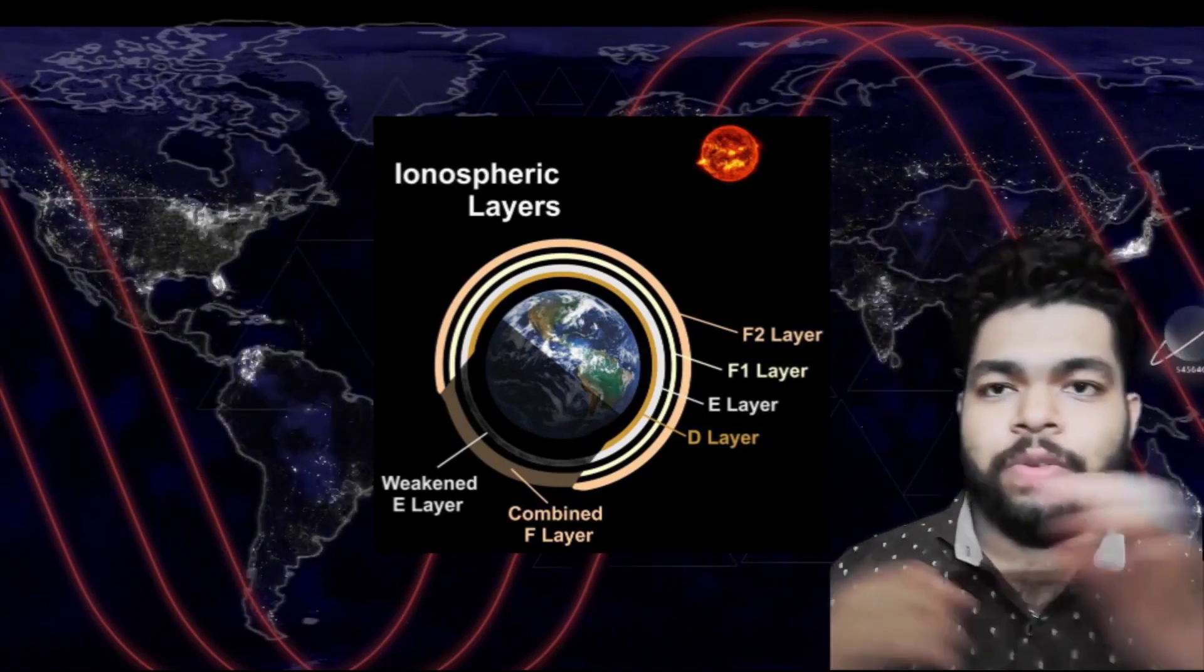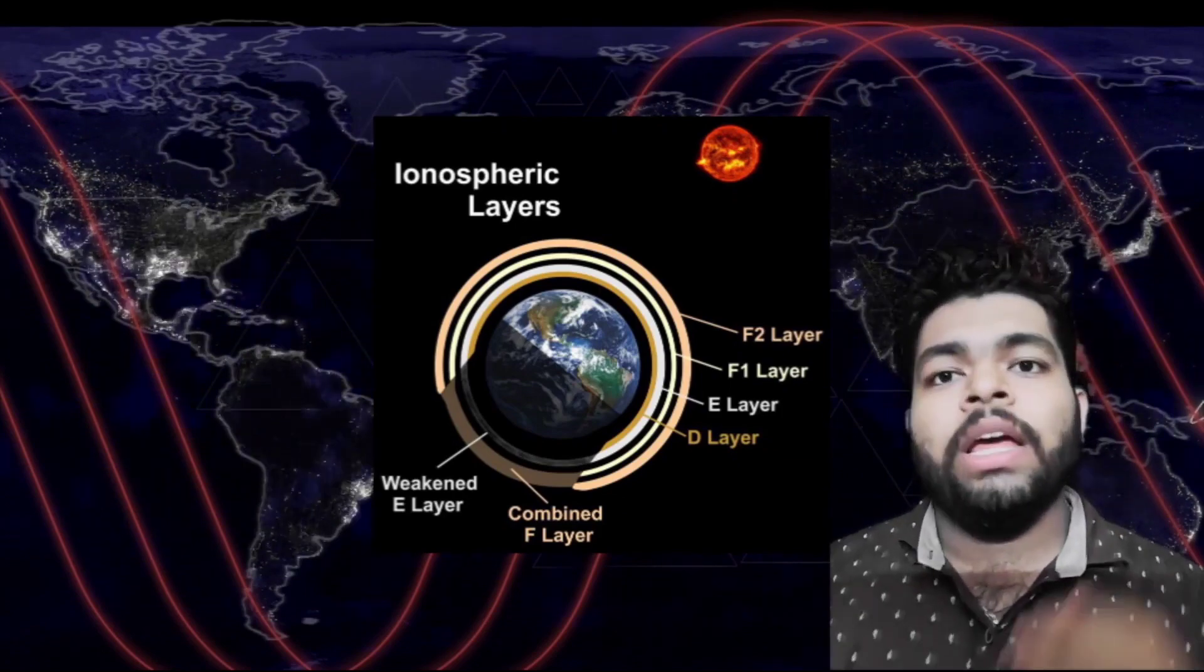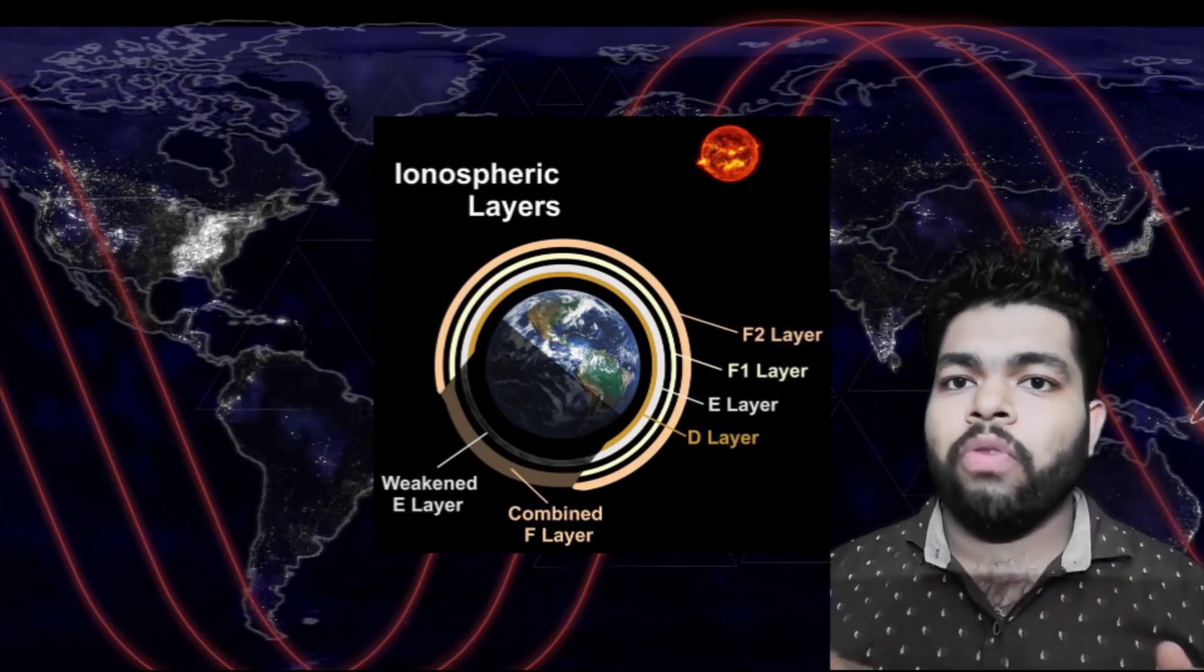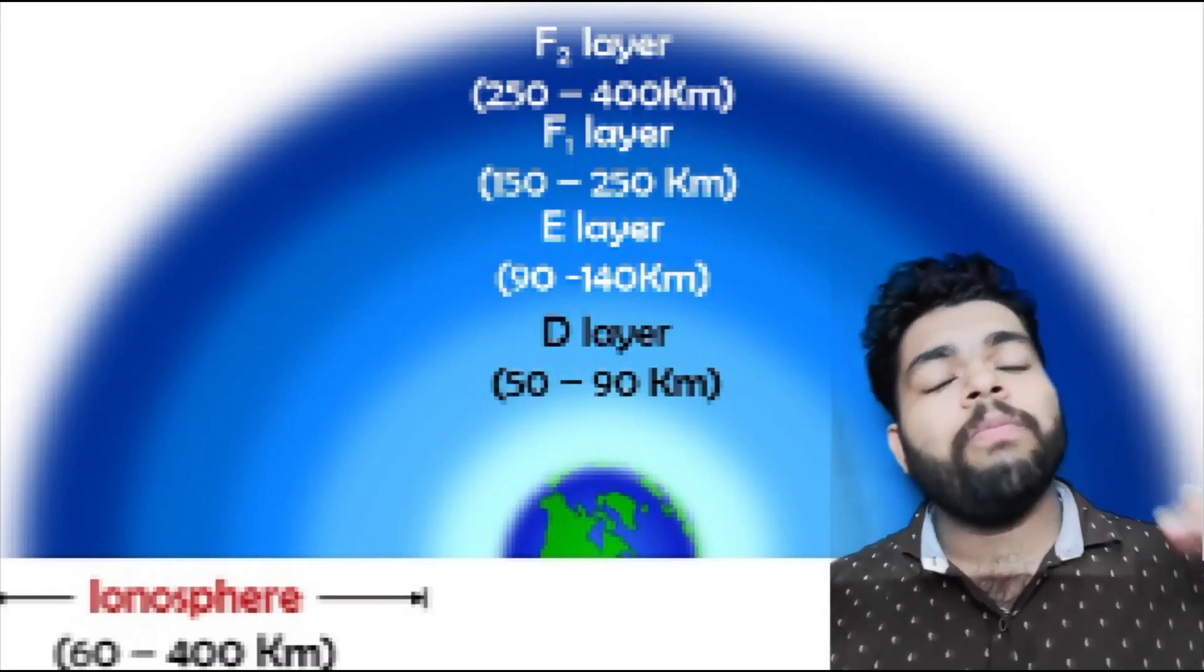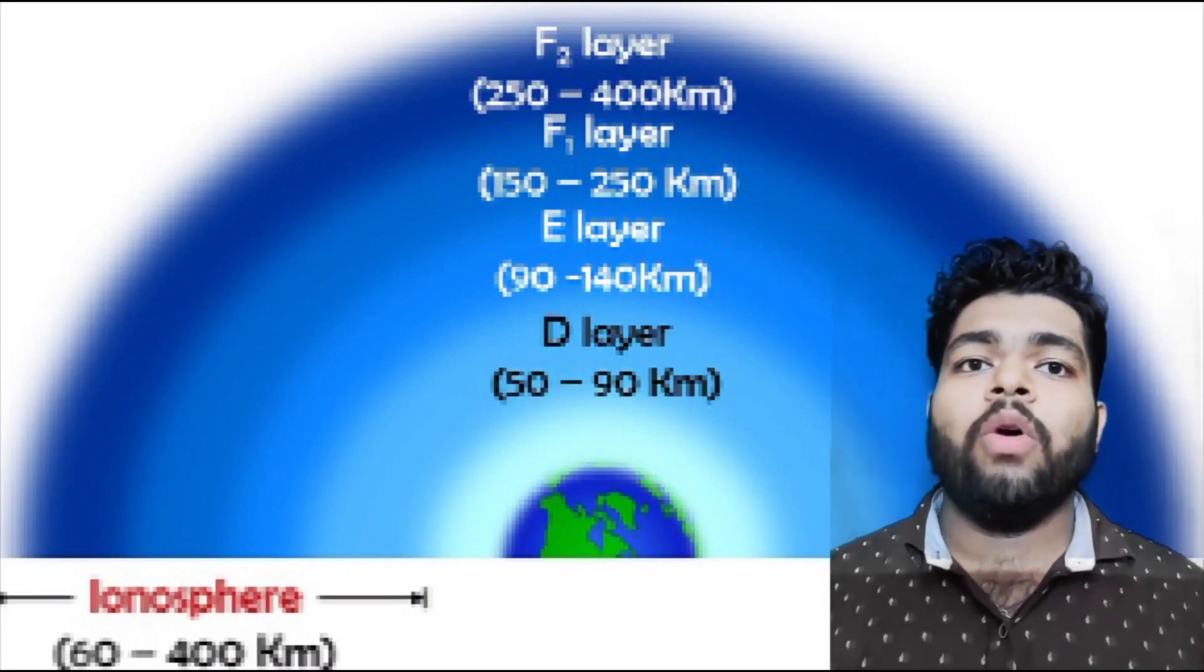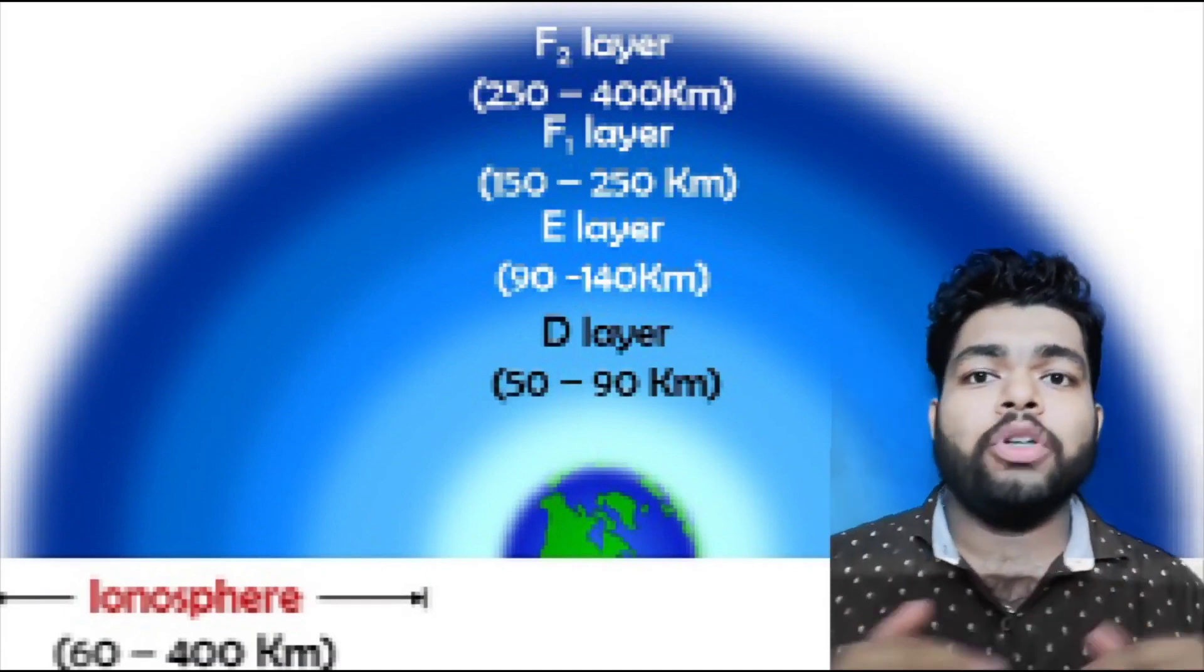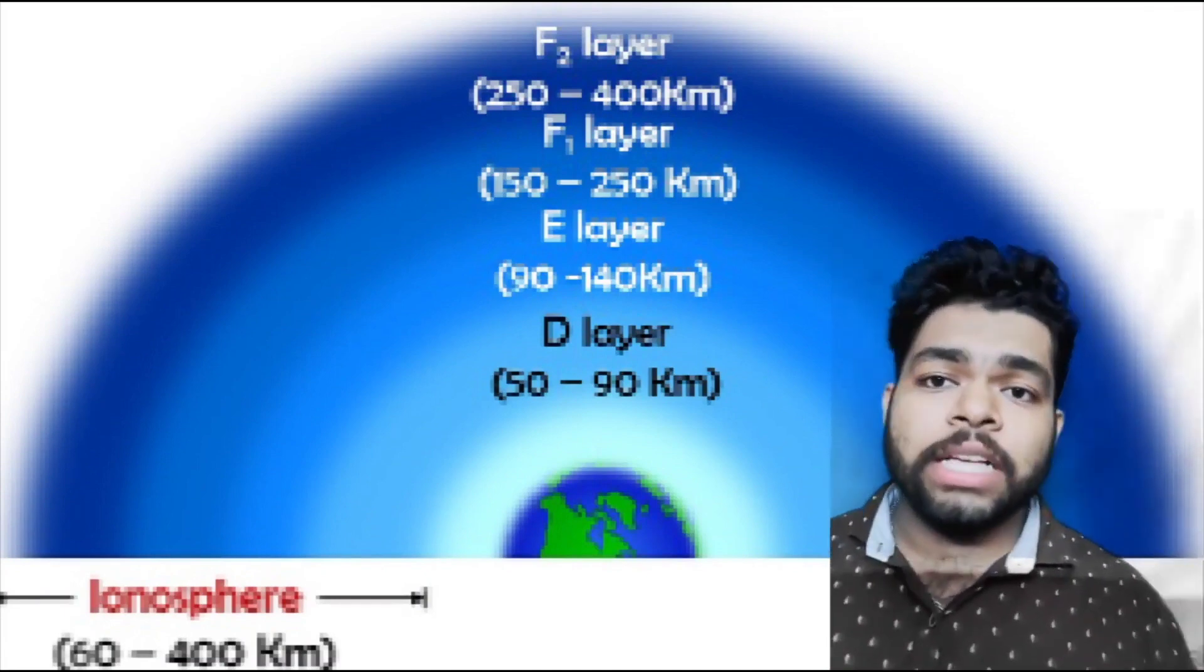The D region is the lowermost region of ionosphere. It reflects very low frequency and low frequency signals, absorbs MF and HF, and is also known as the absorbing layer for short wave signals.